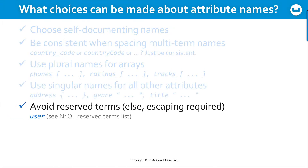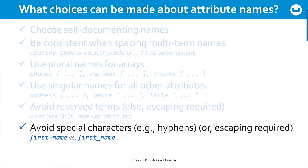You should avoid using reserved terms — there is a reserved term list available in the Nickel documentation online. For example, you'd want to avoid use of the term 'user.' If other constraints require you to use attribute names that are reserved terms in Nickel, that's okay — you would simply escape those terms in Nickel when querying against those particular attributes. Similarly, you'd want to avoid using special characters such as hyphens, so an underscore is the preferred character for spacing when working with attributes in Nickel.